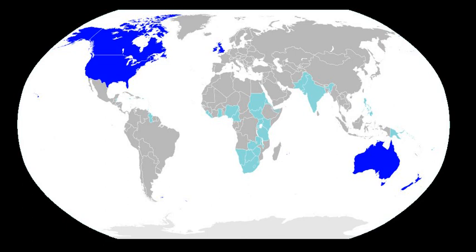In the period from the 8th to the 12th century, Old English gradually transformed through language contact into Middle English. Middle English is often arbitrarily defined as beginning with the conquest of England by William the Conqueror in 1066, but it developed further in the period from 1200 to 1450. The waves of Norse colonisation of northern parts of the British Isles in the 8th and 9th centuries put Old English into intense contact with Old Norse, a North Germanic language. Norse influence was strongest in the northeastern varieties of Old English spoken in the Danelaw area around York, which was the centre of Norse colonisation.